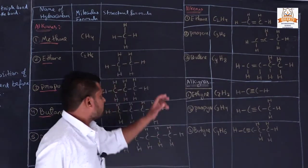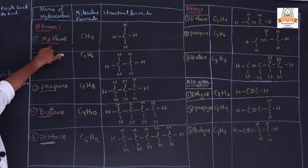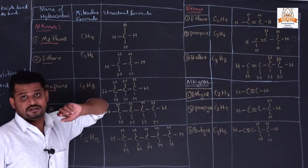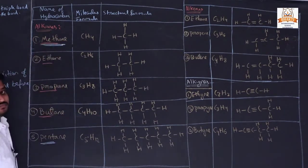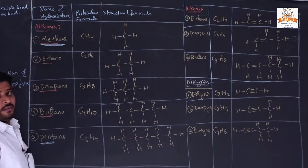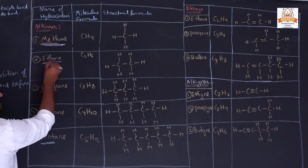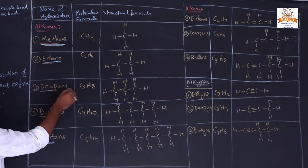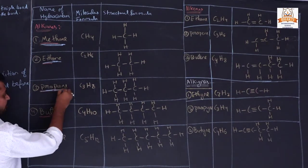So in this example the number of carbon atoms is 1, so it is 'meth-', and the carbon atoms bond with hydrogen as a single bond, so the suffix is '-ane'. The full name is methane. Here number of carbon atoms is 2 and carbon atoms are combined with hydrogen with a single bond, so it is ethane. Number of carbon atoms is 3, so it is prop- and single bond, making it propane.